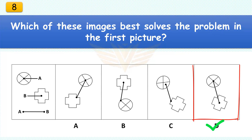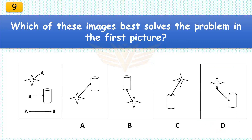Which of these images best solves the problem in the first picture? The correct answer is D. Keep the wheel as is and rotate the cross 45 degrees.